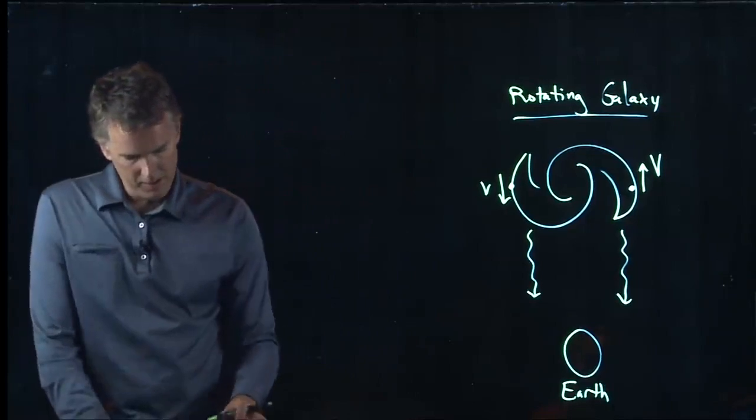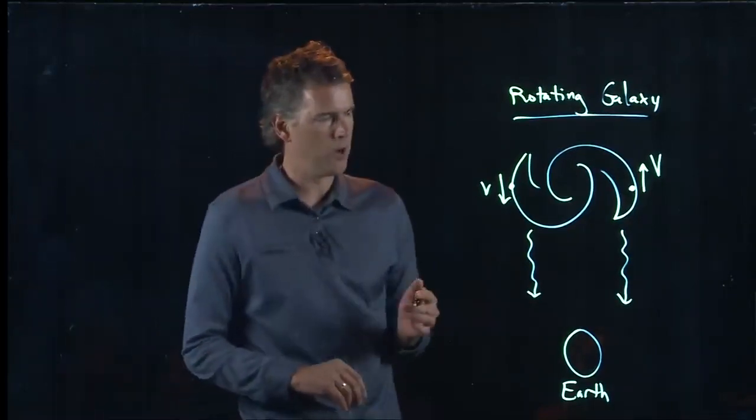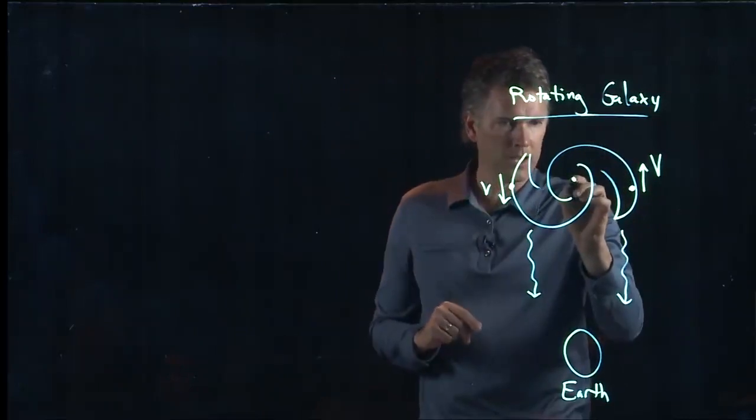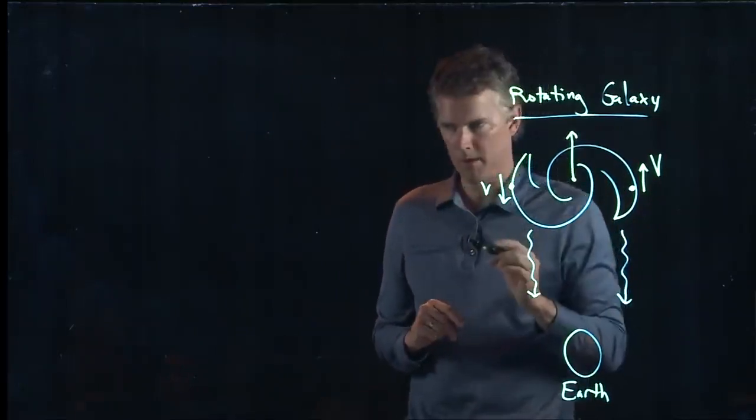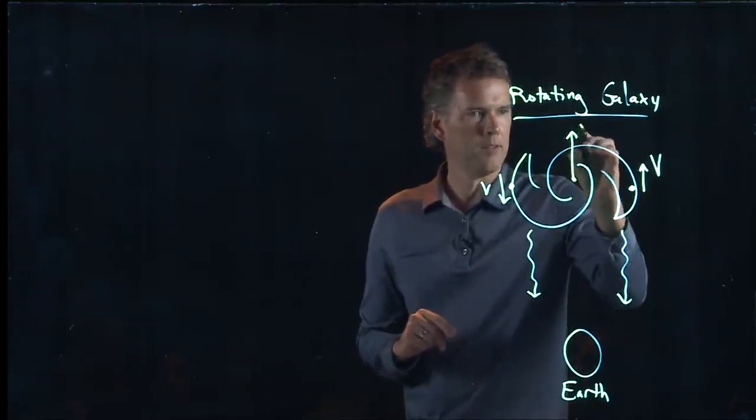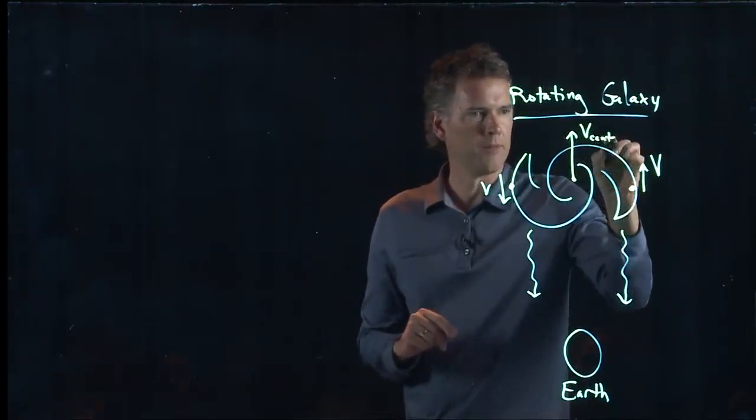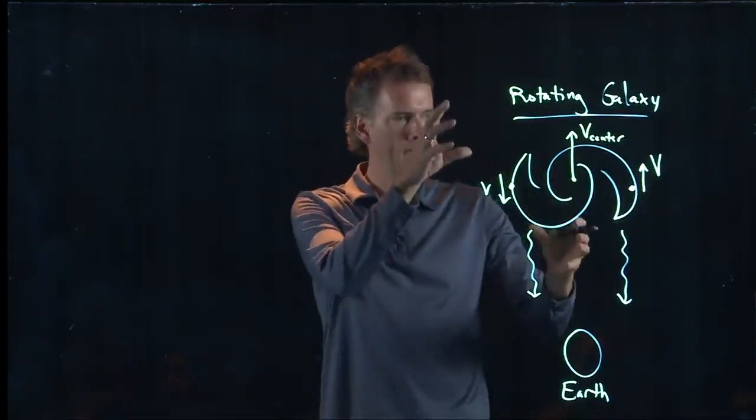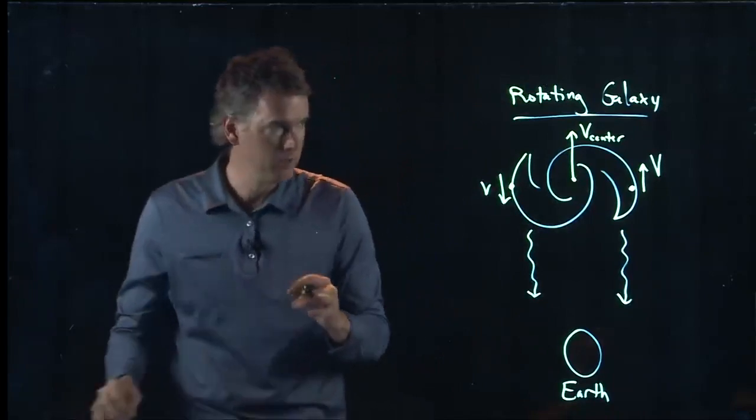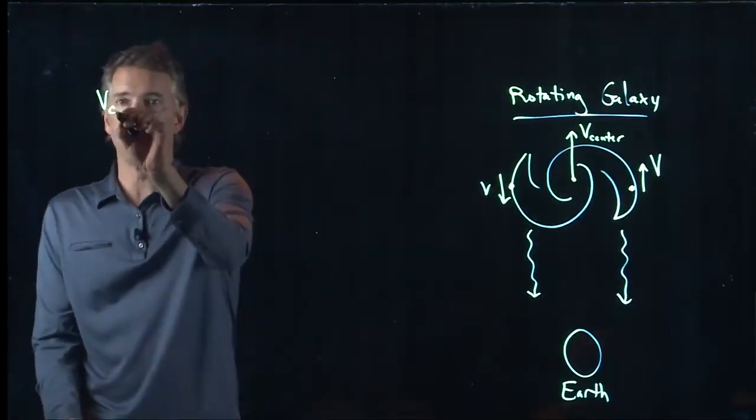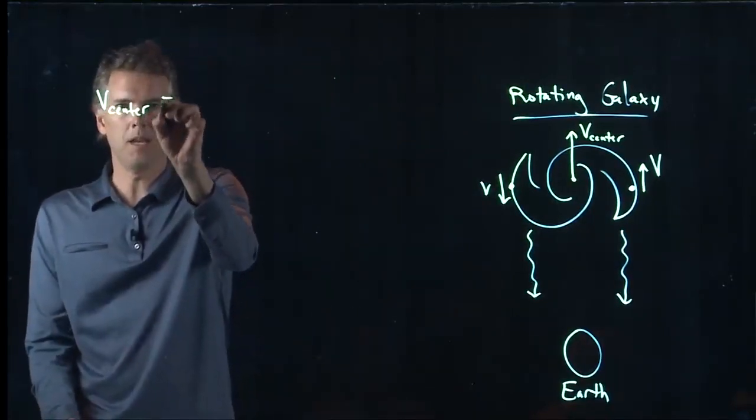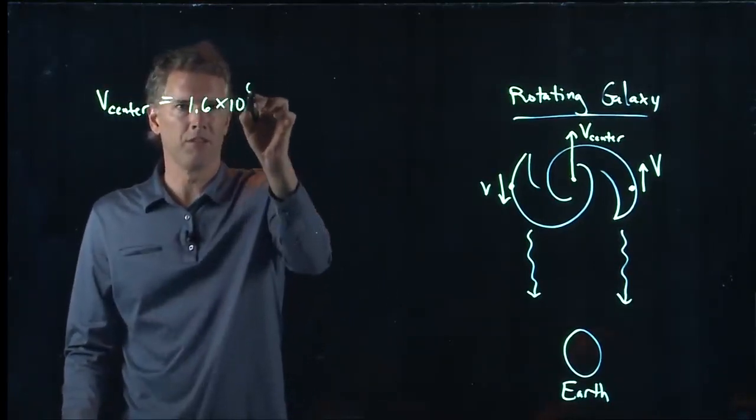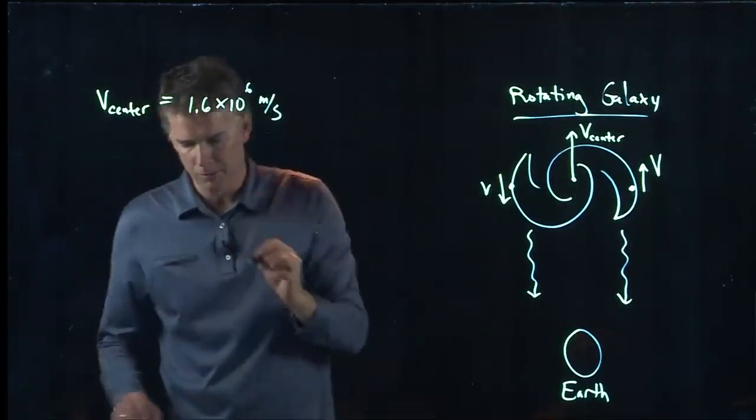Okay, so we're going to say that not only is the whole thing spinning, but the whole thing is moving away from us. And we'll call that speed V of the center. Okay, it's moving away from us and it's rotating. So we have this complicated system. And let's write down some givens. So the speed that it's moving away from us is 1.6 times 10 to the 6 meters per second.